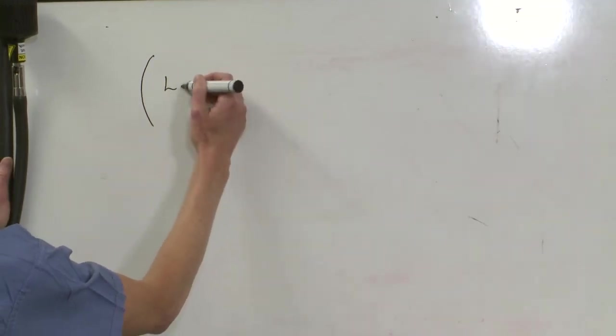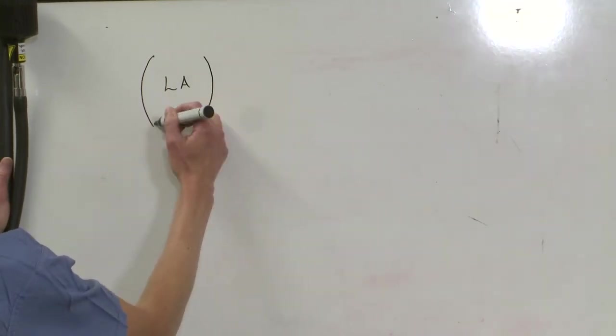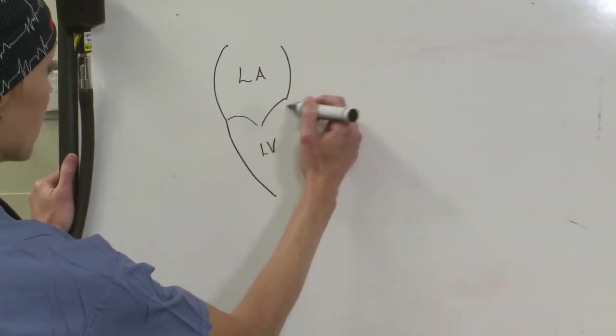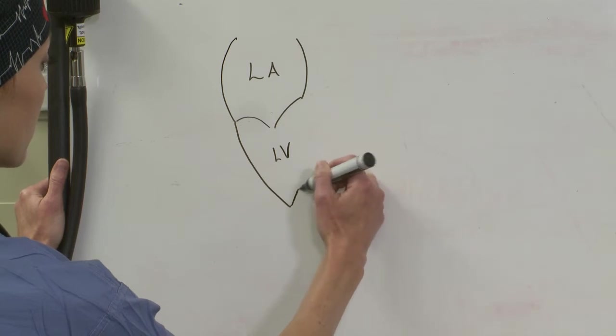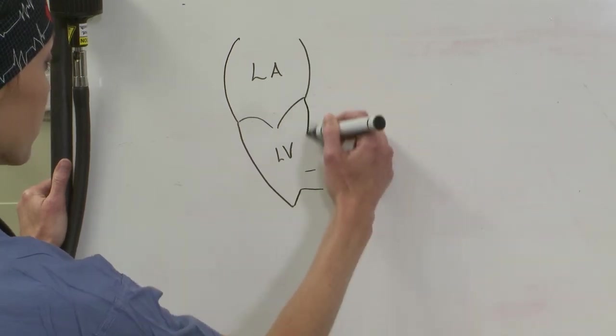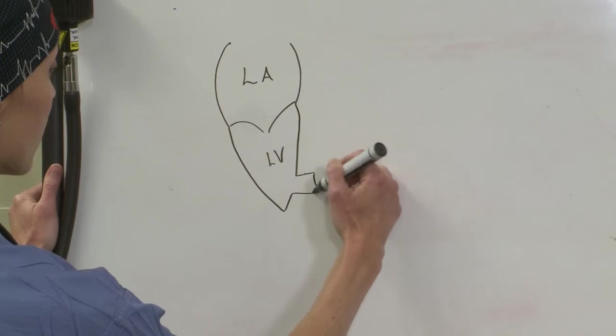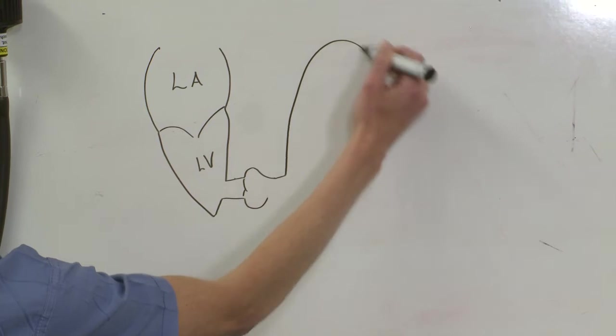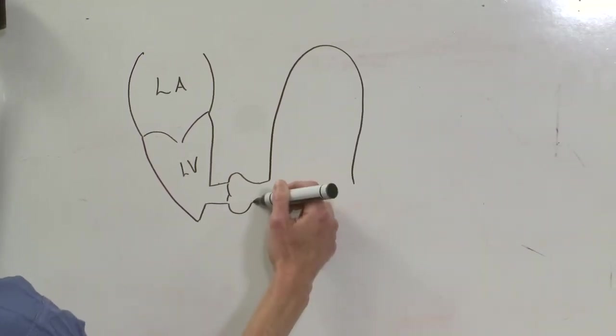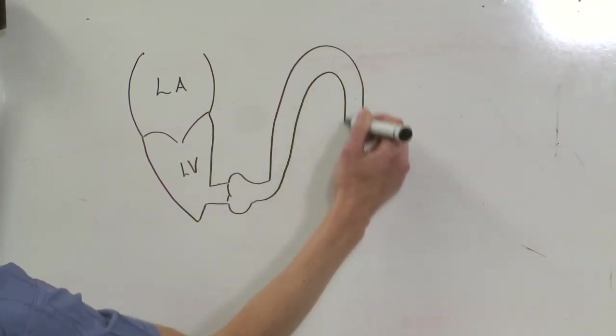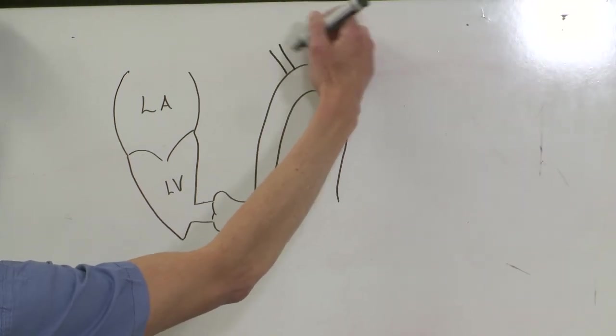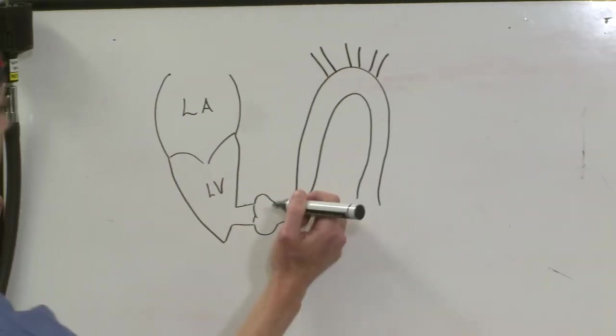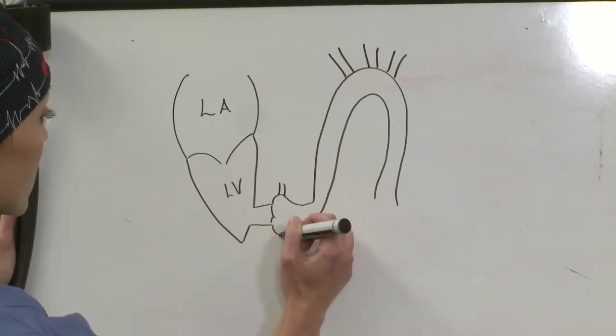First we're going to start out, this is your left atrium. Basically I'm going to create our circulatory system as a tube system so that you can see what I'm trying to illustrate here. There's your LV. We're going to go out the aortic valve, and then we're just kind of creating this so that you all can see what I'm trying to illustrate here. And then we've got our three main branches off the aorta.